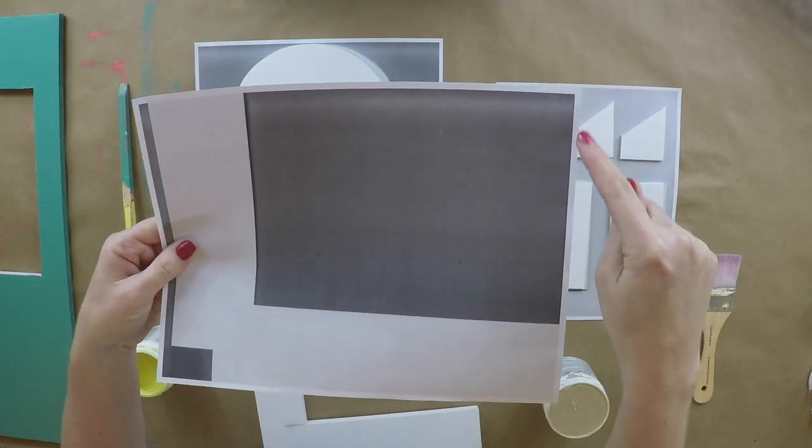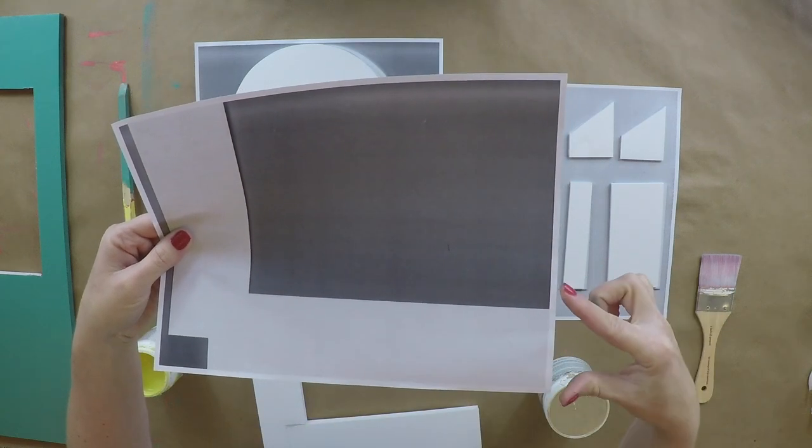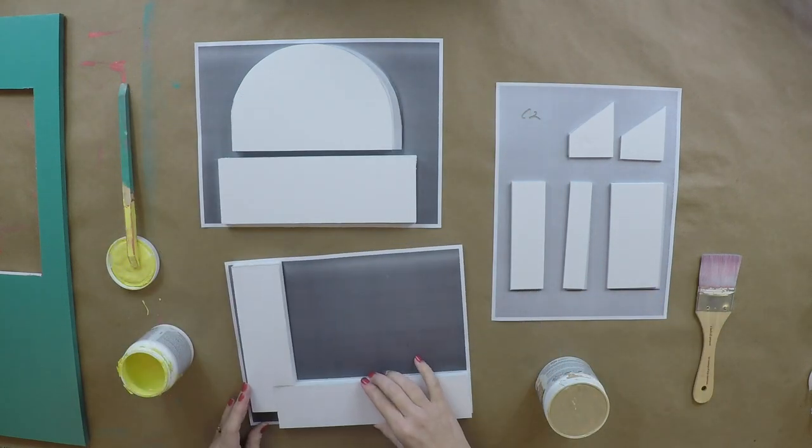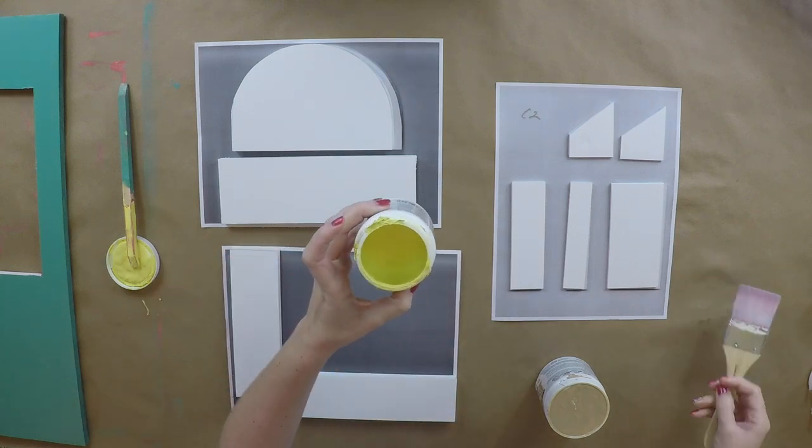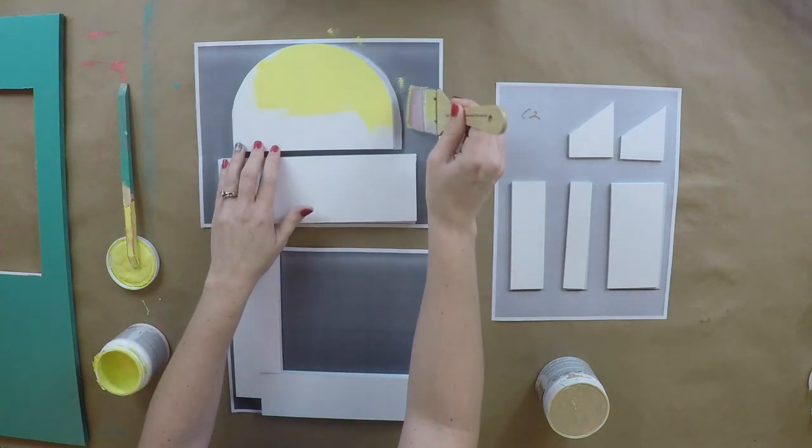On the countertop, you need to cut all the way to the edge of the paper to make sure the counter is long enough. For the yellow pieces, I am using a Glidden Lemon Lime Fizz.